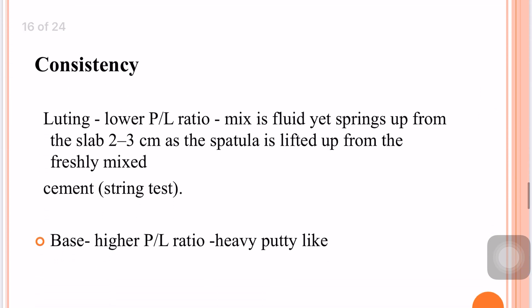There are two types of consistency for zinc phosphate cement: luting consistency and base consistency. Luting consistency has a lower powder-liquid ratio; the mix is slightly fluid and springs up from the slab about 2 to 3 centimeters as the spatula is lifted — this is called the spring test. Base consistency has a higher powder-liquid ratio and is more like a heavy putty.